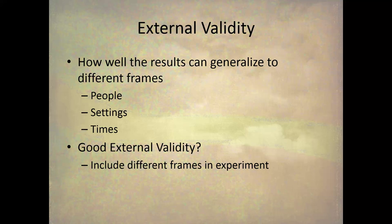In general, we talk about three different frames: people, settings, and times. One way to ensure good external validity is to include the different frames in your experiment. For example, if you don't have men in your experiment, don't generalize the results to men. As you design your experiment for good external validity, think about what group of people you want to generalize to, and make sure you have examples of all those people, settings, or times in your experiment.